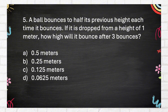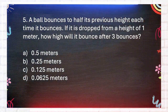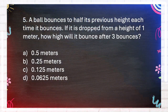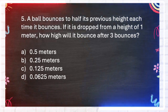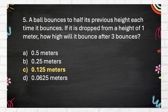Number 5. A ball bounces to half its previous height each time it bounces. If it is dropped from a height of 1 meter, how high will it bounce after 3 bounces? A. 0.5 meters. B. 0.25 meters. C. 0.125 meters. D. 0.0625 meters. The correct answer is C, 0.125 meters.